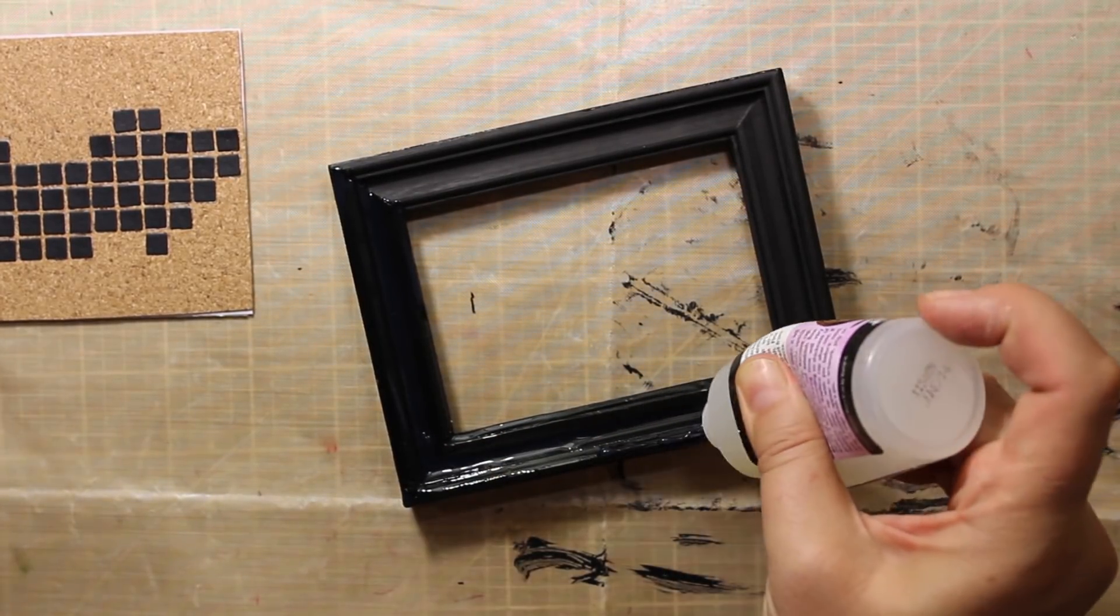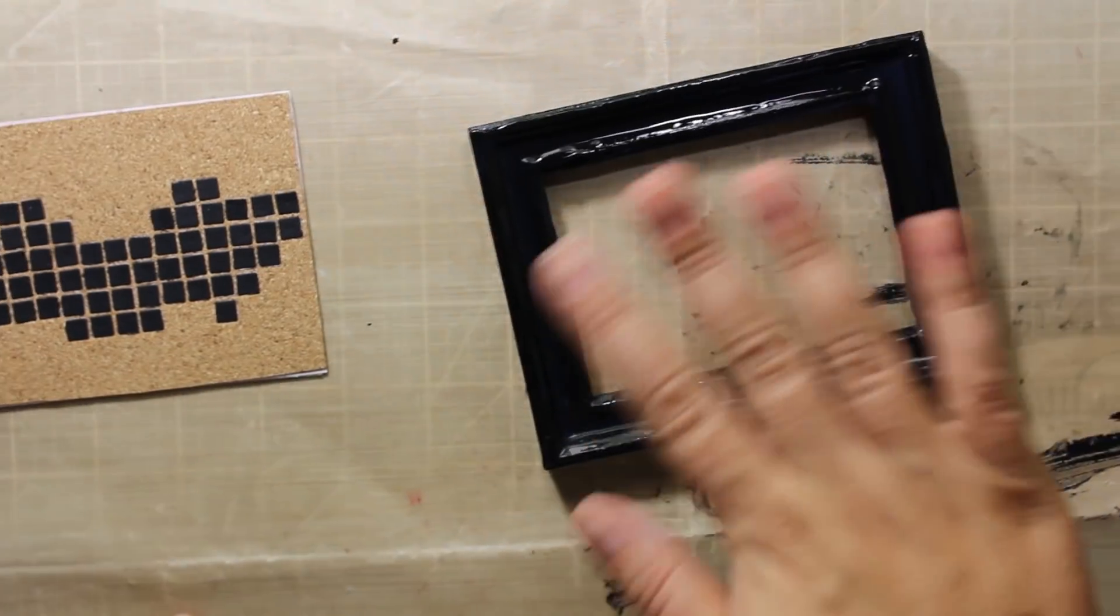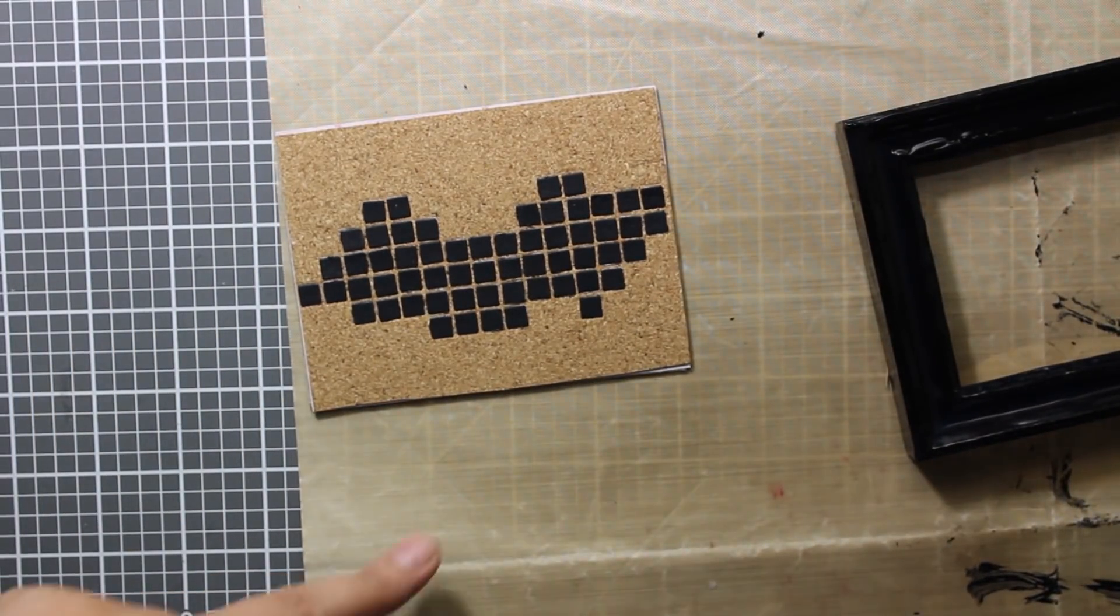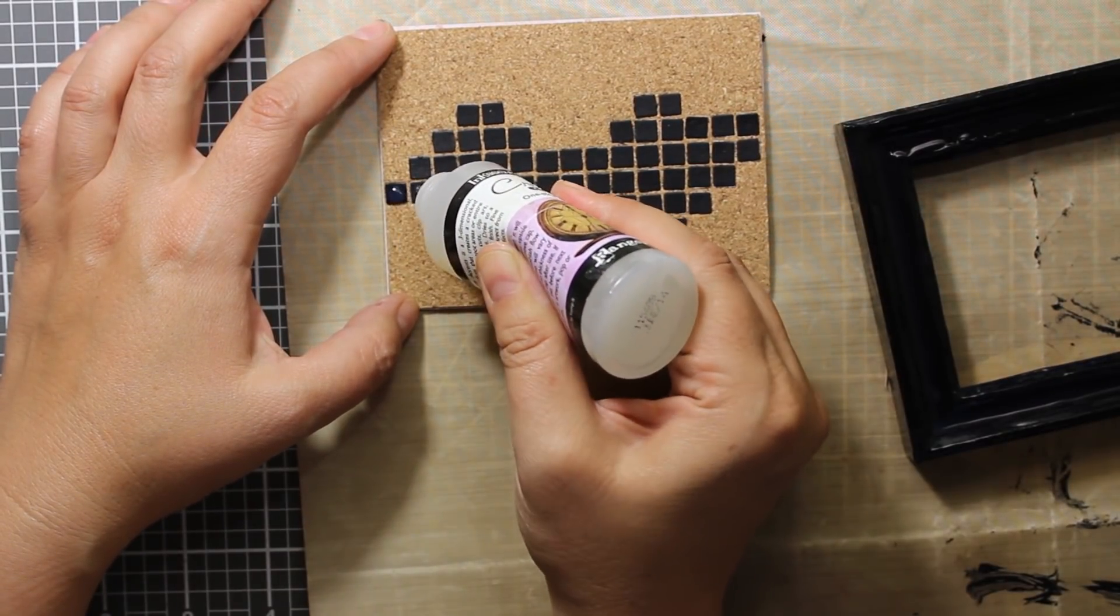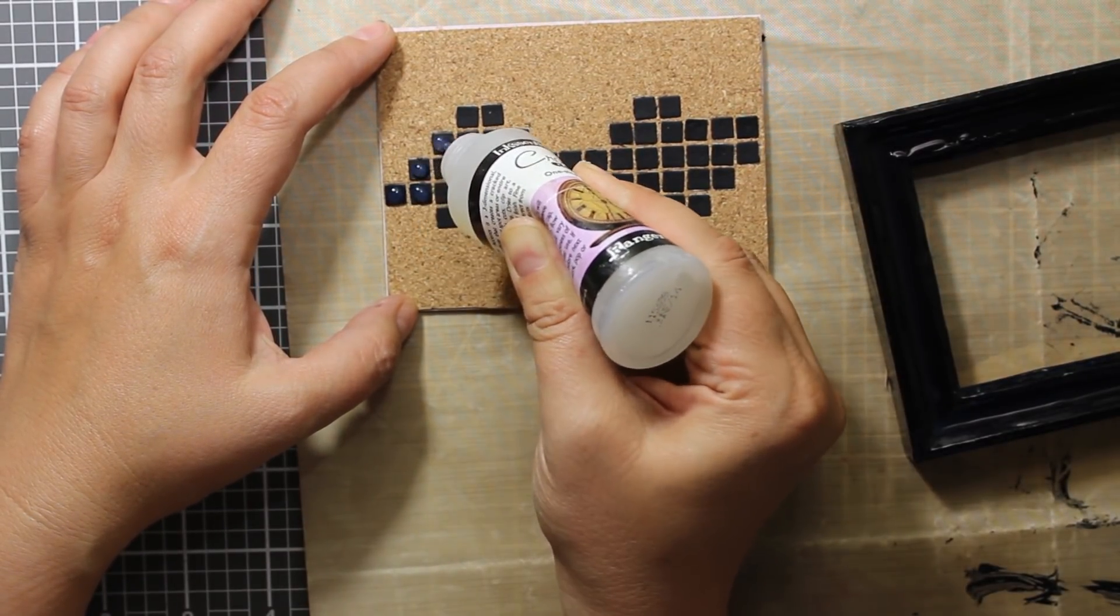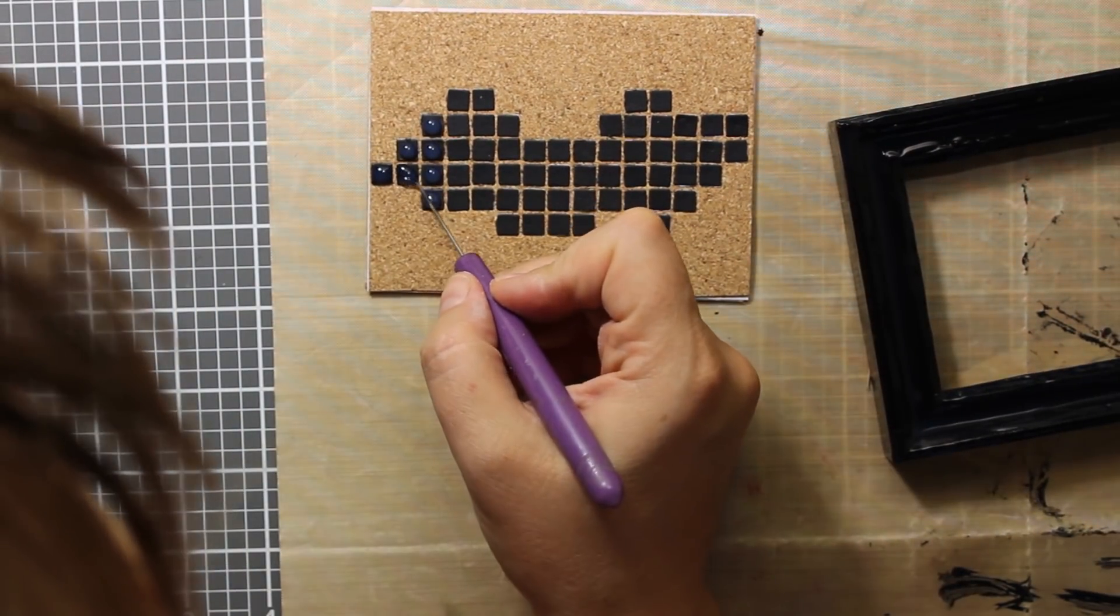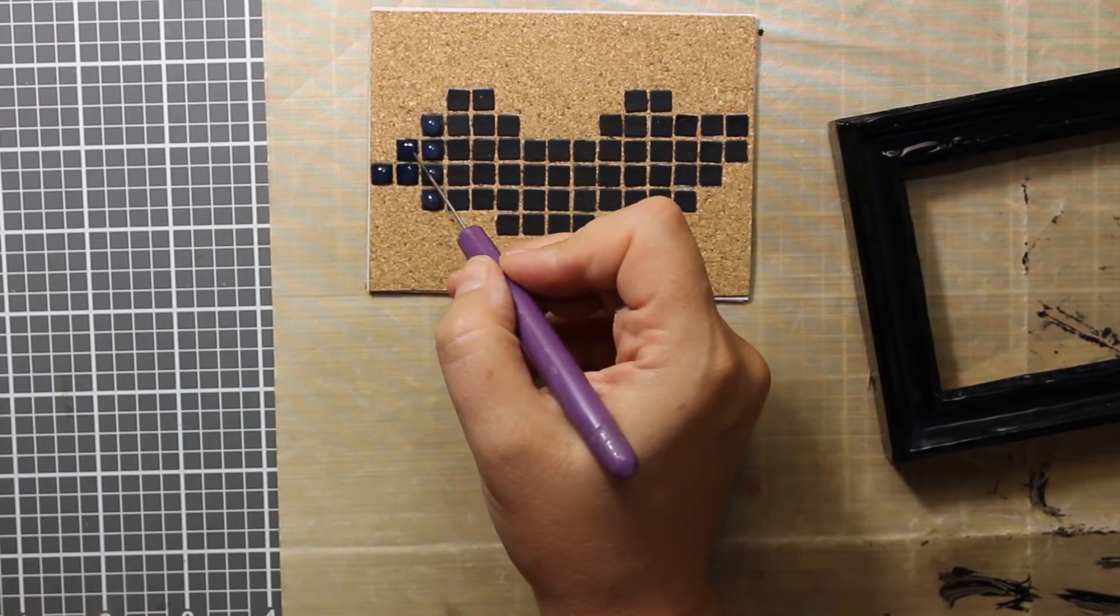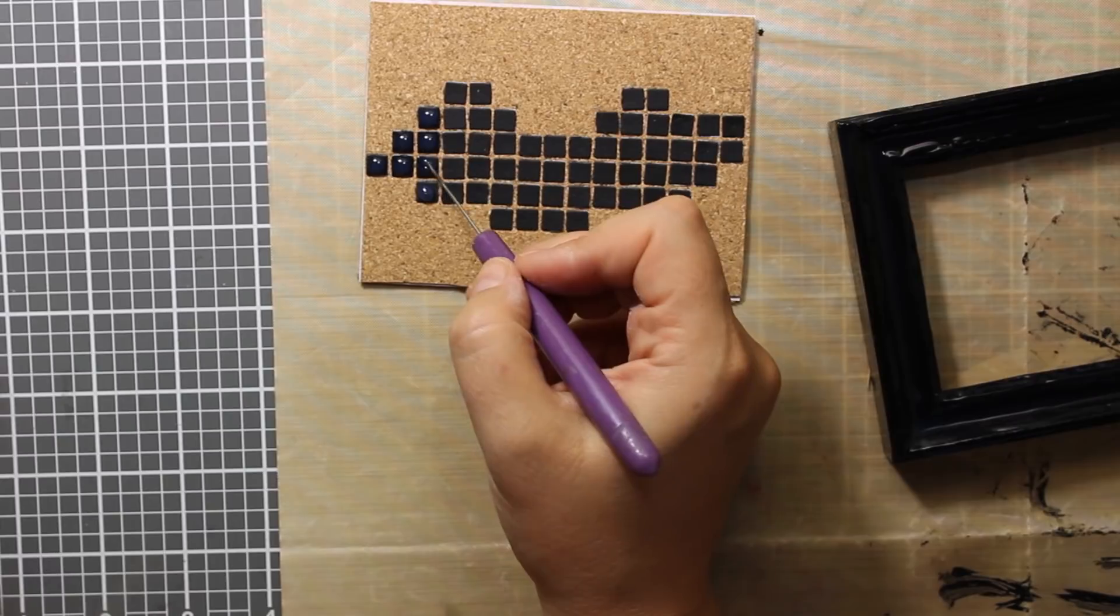I'm also going to apply crackle accents onto the tiles to match the frame. So what I'm doing is I'm going to squeeze out one large droplet onto each of the tiles and then I'm going to use the poke tool to spread out the medium so that it reaches all the corners of the tiles. Then I'll have to set it aside to dry overnight.